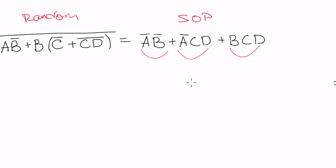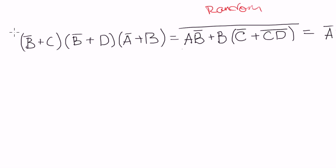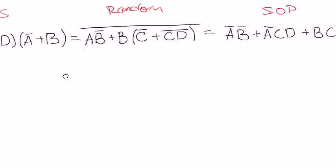But it's not the only possible way, not the only possible form. Besides sum of products and standard sum of products form, there is another form. Look here — this form is called product of sums form. We know that because we have products here, and these products are made of sums: this one, this one, this one, and this one.